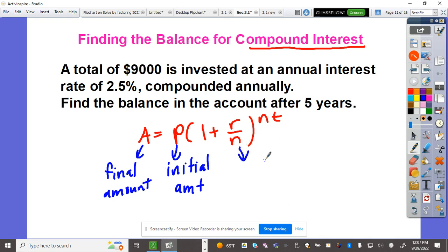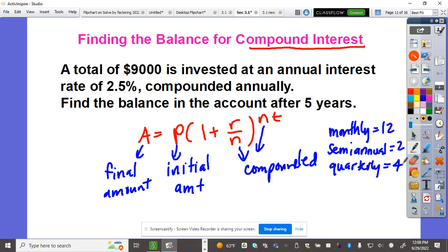N is the number of times compounded. If it's compounded monthly in a year, that's 12 times. Semi-annual is twice a year, quarterly is four times, weekly is 52, daily is 365. If it's annual, it's once a year.